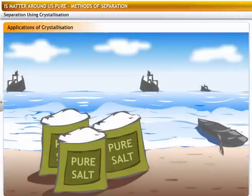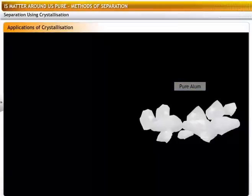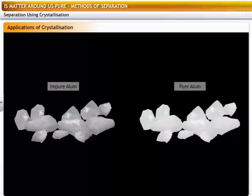Crystallization is used for purification of salt that we get from sea water and separation of crystals of alum from impure samples.